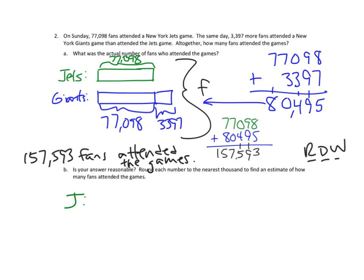All right. Well, let's see. For the Jets fans, we had 77,098 fans. And we're going to round that to the nearest 1,000. Let's see. The nearest 1,000 is here. So this is 77,000. So it's either going to be 77,000 or 78,000. Well, let's see. If we look to our next place value, our hundreds is very low. It's a zero. So that tells us we're going to round down. So that's about 77,000 fans.